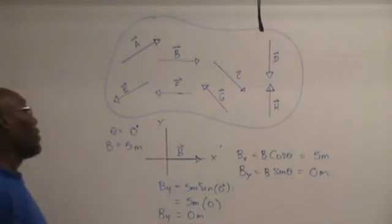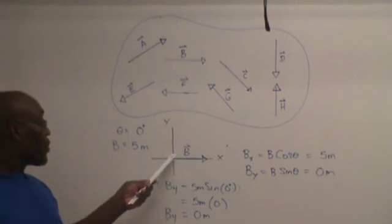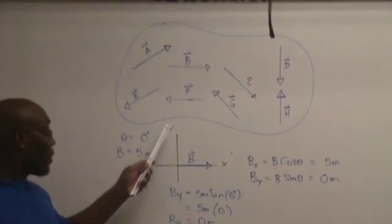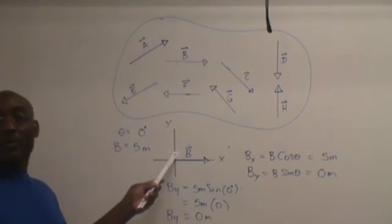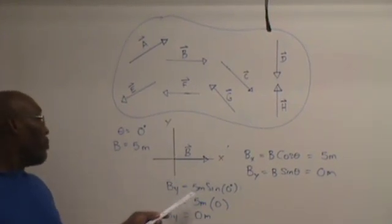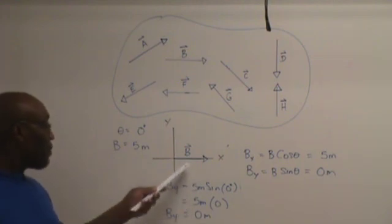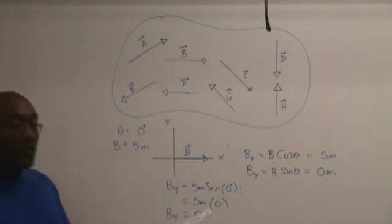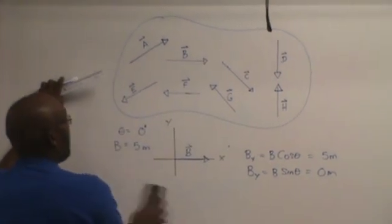If you look at the diagram, you will see that it makes sense. There's absolutely no Y component there. There's no vector lying along the Y axis, so there's no Y component. The magnitude of BX is the magnitude of the vector B itself. So that's it for vector B.